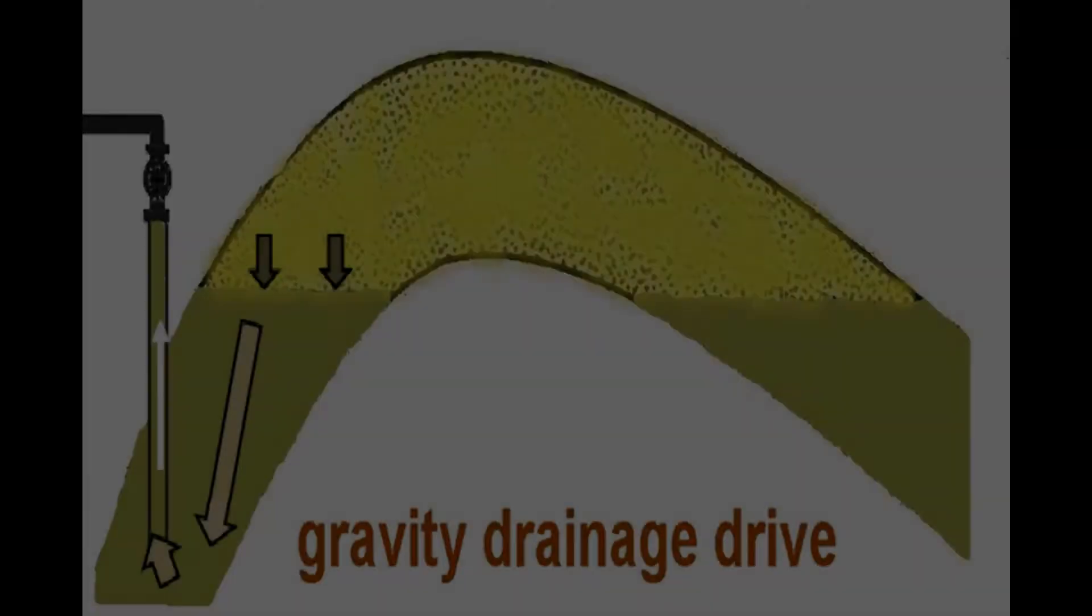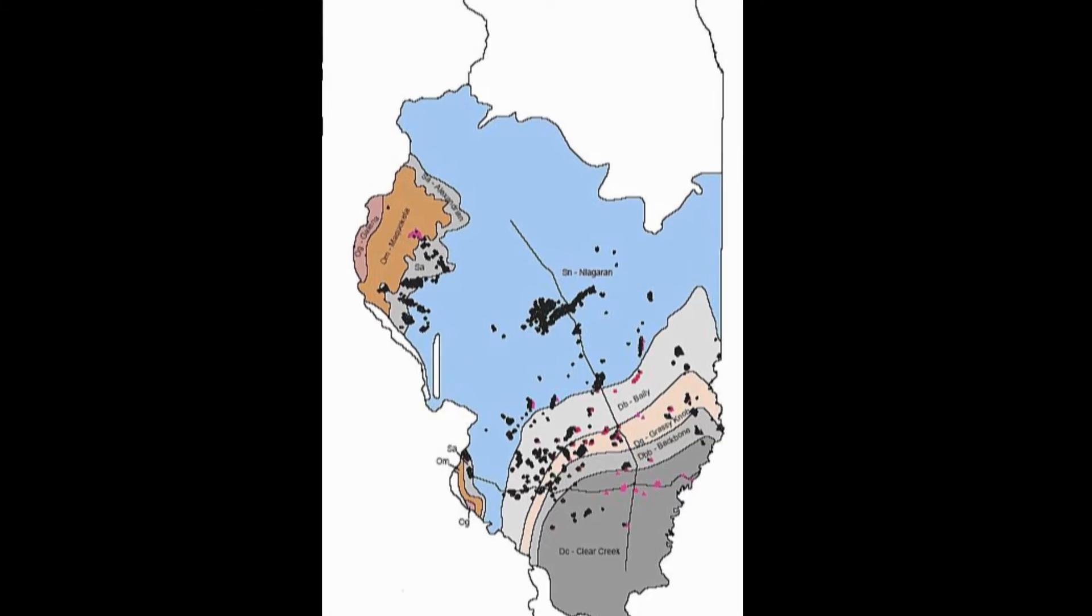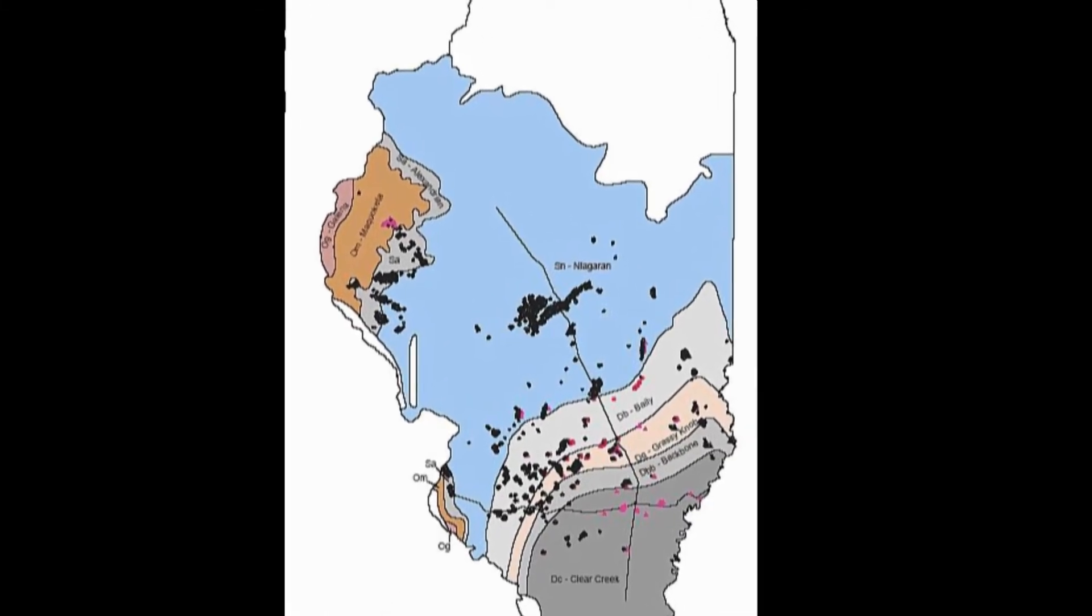The fourth type of drive is gravity drainage. Found in isolated locations where the pressure may have already been depleted or found in reservoirs with very high permeability, the remaining oil will slowly drain into a well due to gravity and can then be pumped out. You can find reservoirs like these being produced in Illinois and Indiana in the United States.